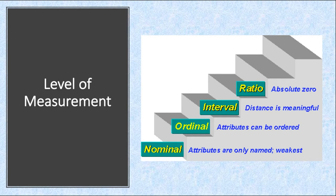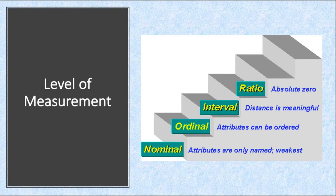We have four levels of measurement. Nominal is the weakest — attributes are only names. The numbers don't carry meaning; you can rearrange them without affecting anything. Ordinal is next — attributes can be ordered, and that order is important. For example, hours studied per week: one to five, six to ten, eleven to fifteen, more than fifteen — this order cannot be mixed up. Interval means the distance between values is meaningful. Ratio is the strongest, with an absolute zero.